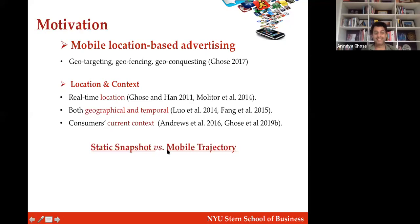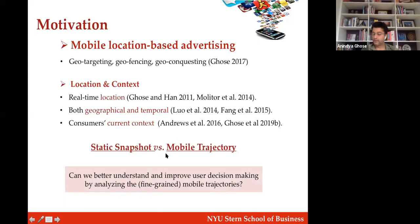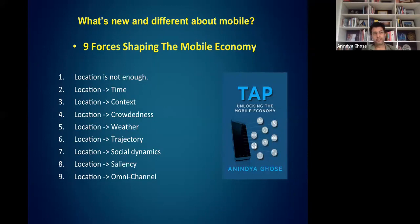If you know people's trajectory over a longer period of time, can that be helpful in getting more information about the customer's intent or context? That's the context we tackle today: can we better understand and improve decision-making by analyzing the trajectory data of people? I also identify nine forces shaping the mobile economy in the book, some well-studied and some barely studied, representing opportunities for further academic research.